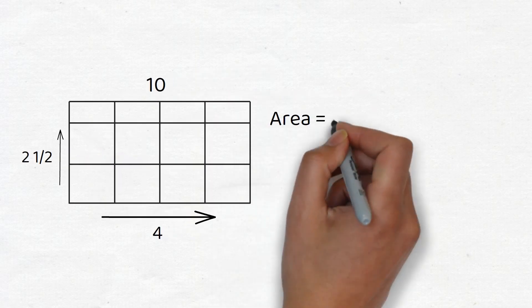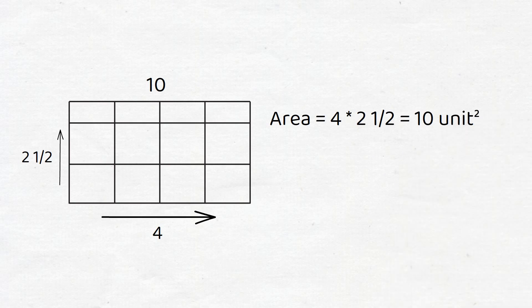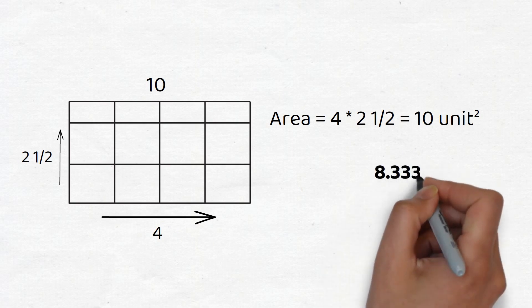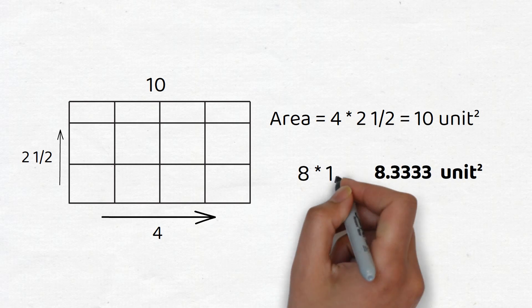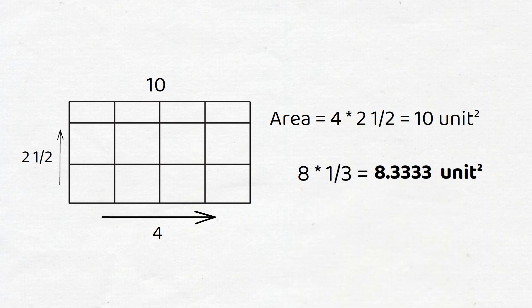Thus, if we multiply four by two and a half, we get 10 unit squares. The point is that sometimes when we compute area, we don't get an integer answer, but that's okay. If we get an answer of 8.33333 as an area, that means the total number of units square was 8 together with a third of a unit square.